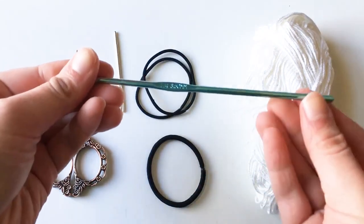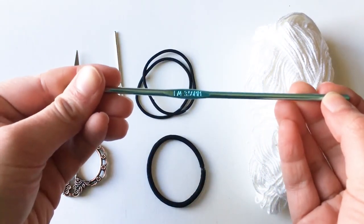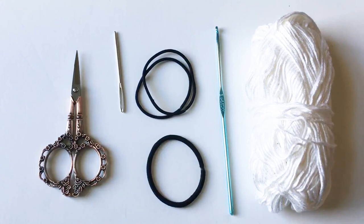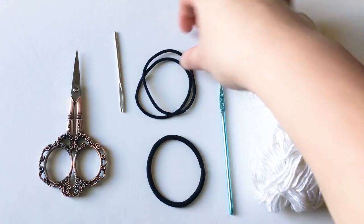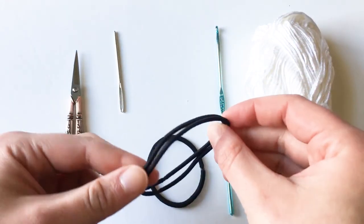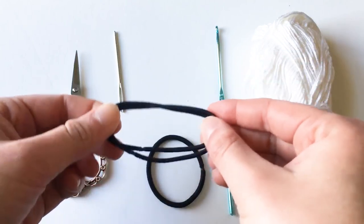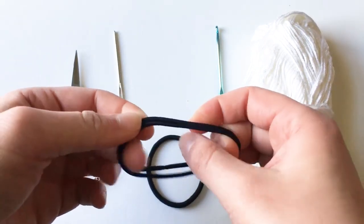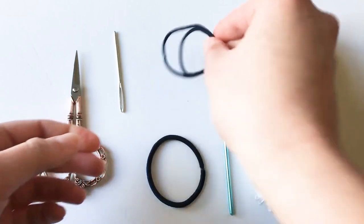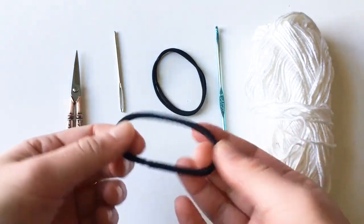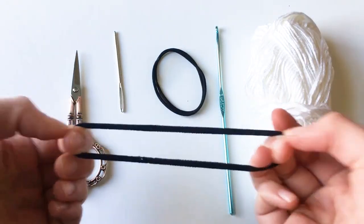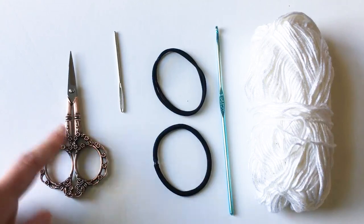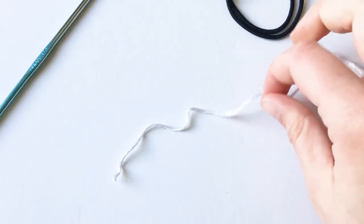You will need an E 3.5 millimeter crochet hook and ponytail holders. I like to use two thin ponytail holders together because then the scrunchie won't over stretch and in the instance where one would break you still have that other one. But you can also use one thick one if you like. You will also need a tapestry needle and some scissors.